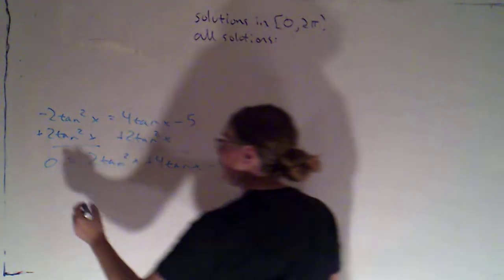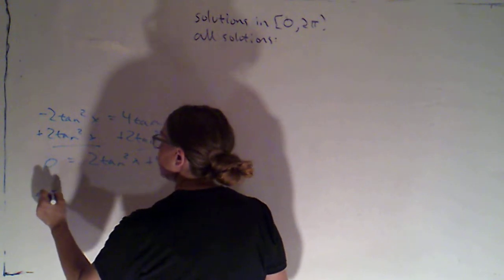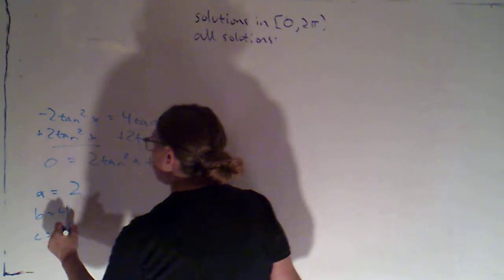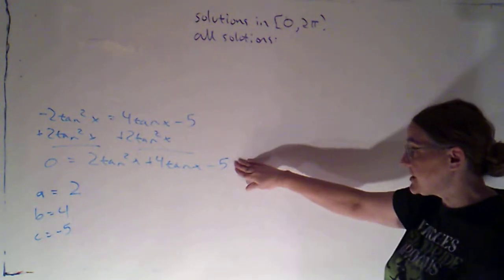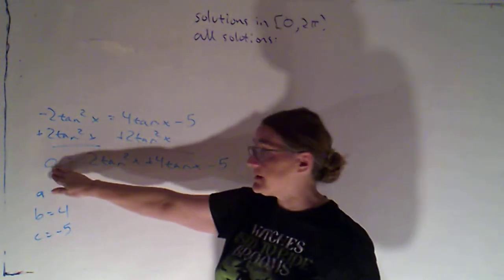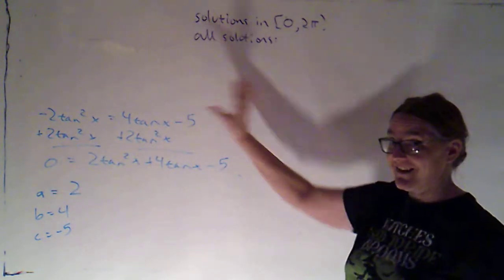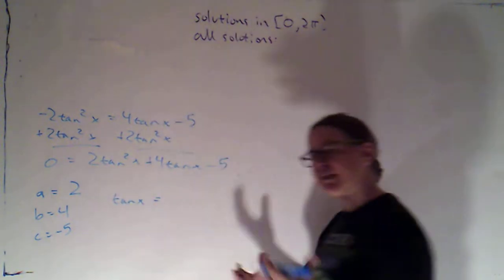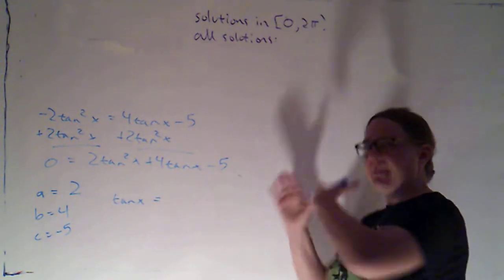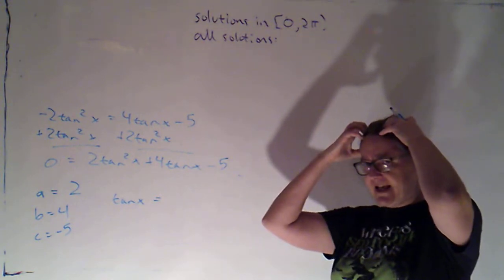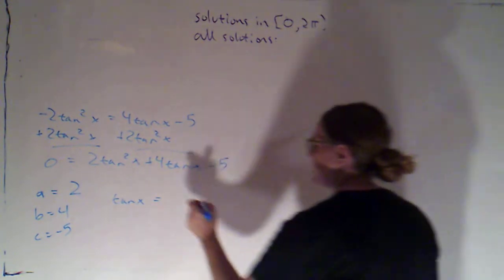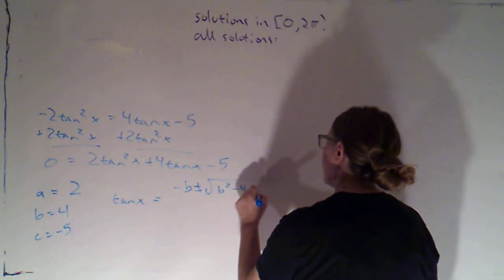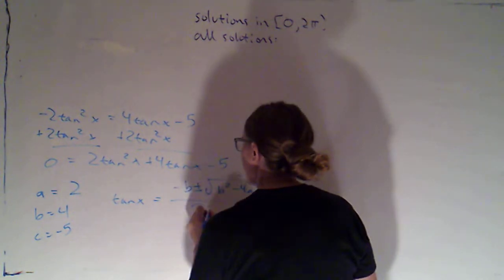Since this is a quadratic in tangent, I'll use the formula to solve for tangent. My a = 2, b = 4, c = −5 — taken from the version where everything equals zero, not the original. I like to write out the formula first before plugging in, so I'm not multitasking. Tangent of x equals negative b plus or minus the square root of b² − 4ac, all over 2a.